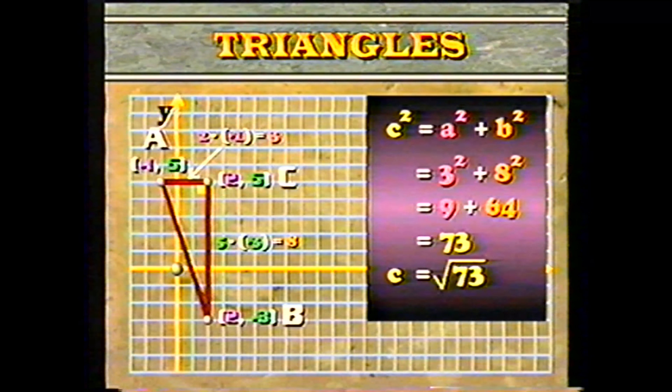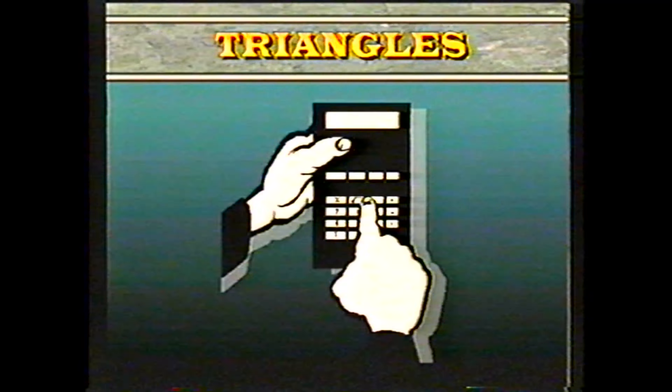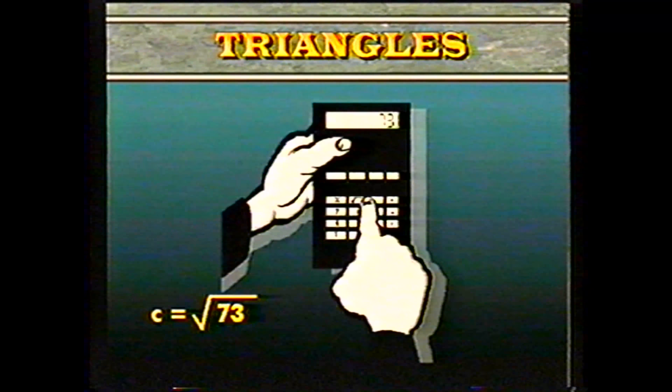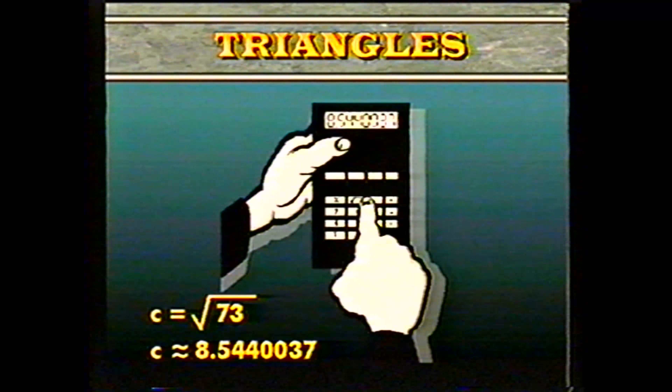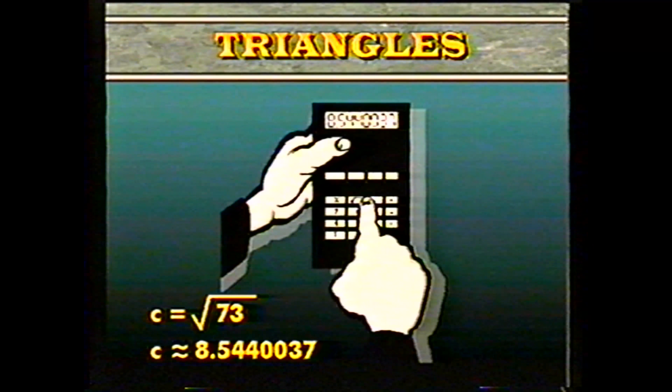Then C equals the square root of 73. The square root of 73 is not a whole number. You can find its approximate value by using a calculator. Keying in 73 and then the square root sign gives us 8.5440037. This is not an exact answer, but it's a good approximation, and it tells us that the length is about 8 and a half.